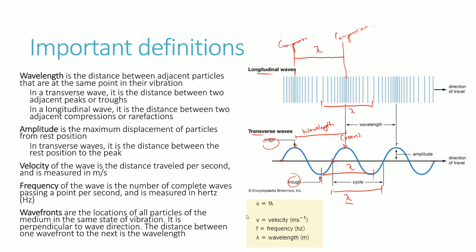The amplitude is the maximum displacement of particles from their rest position. In a transverse wave, it's the distance between the rest position and the peak, or equivalently the rest position and a trough. The velocity of the wave, just like normal velocity, is distance divided by time — the distance travelled by the wave per second — measured in meters per second. The frequency is the number of complete waves passing a point per second, measured in hertz.